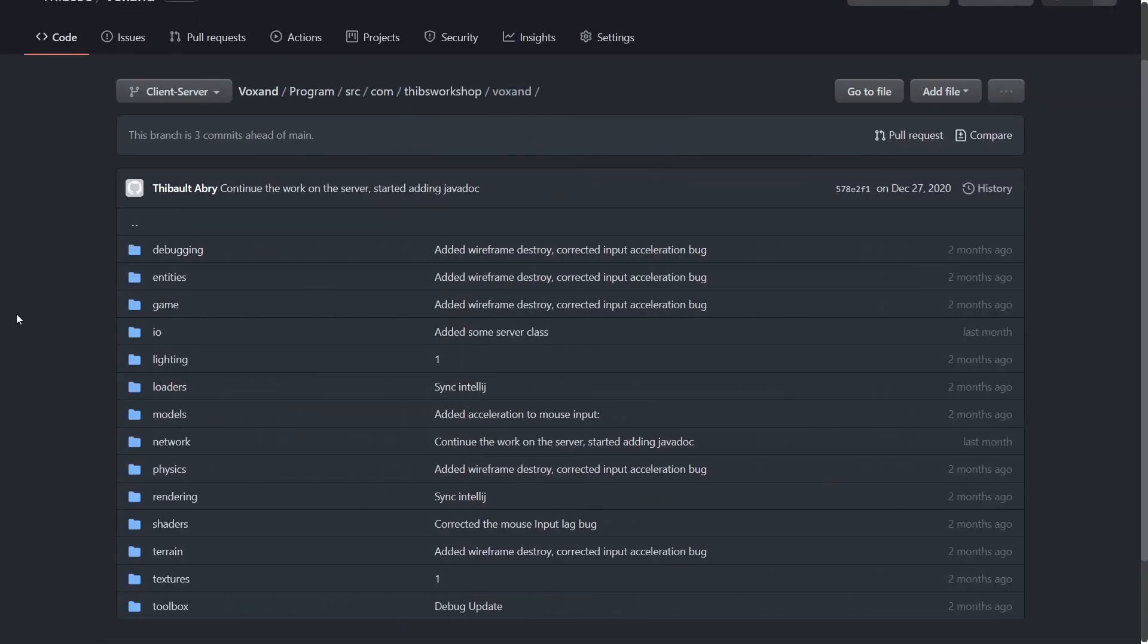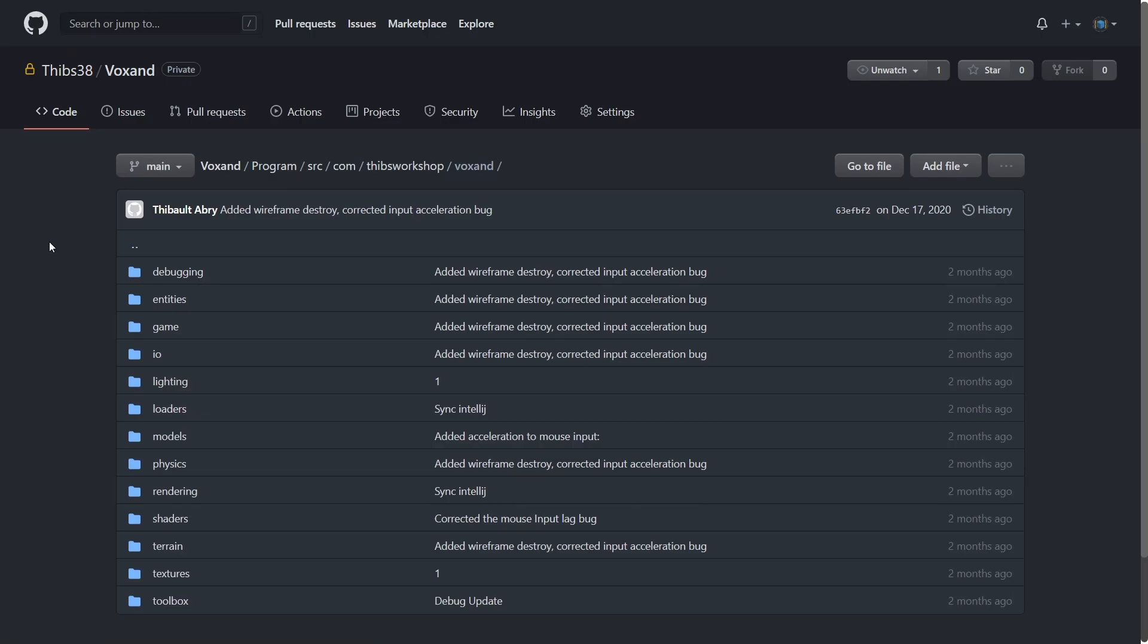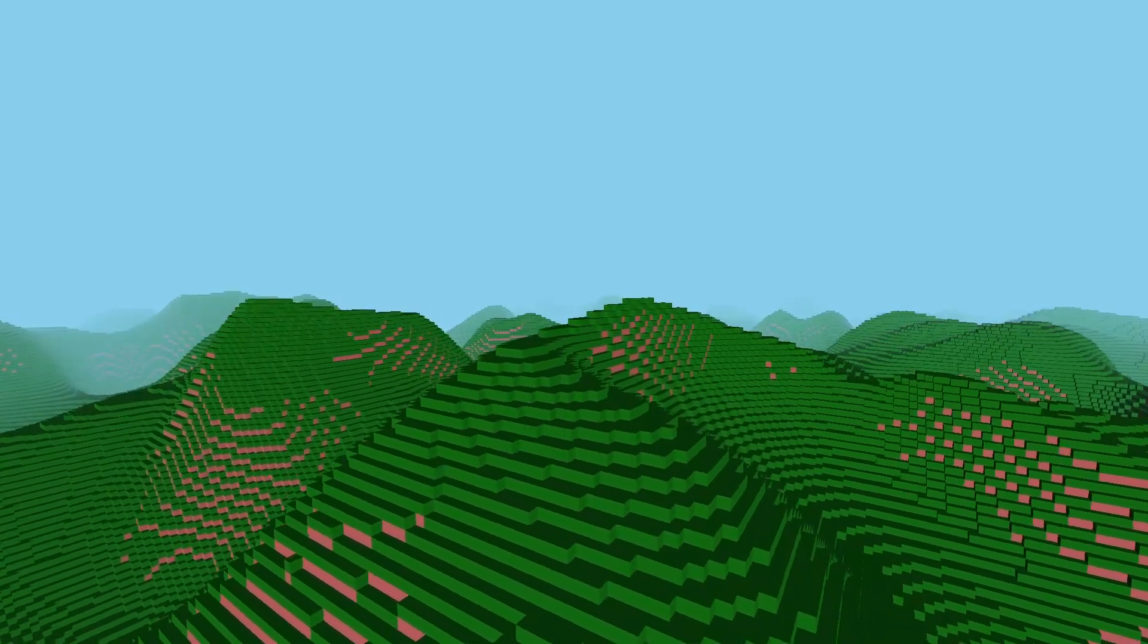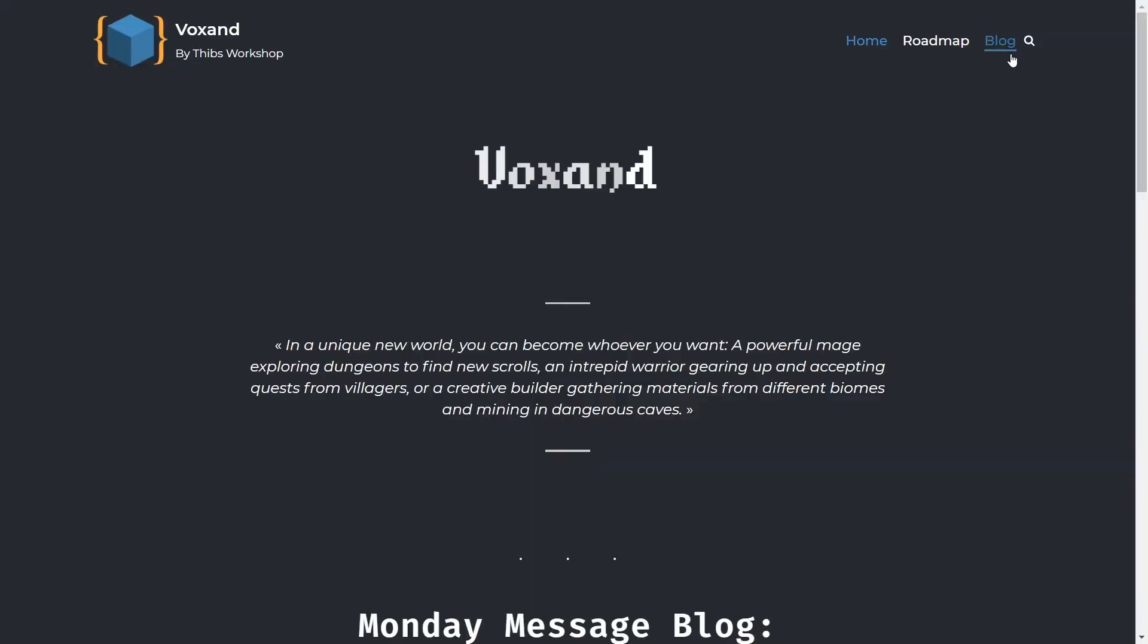Because I put networking in a separated branch in the git repository, I just have to switch back to the main branch without any consequences. So let's go for physics, but just before we get started, I wanted to introduce the Voxend website.